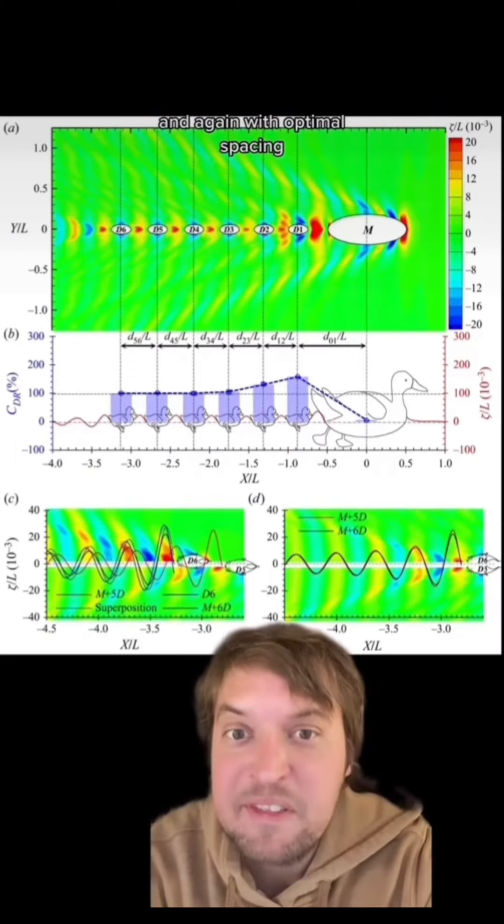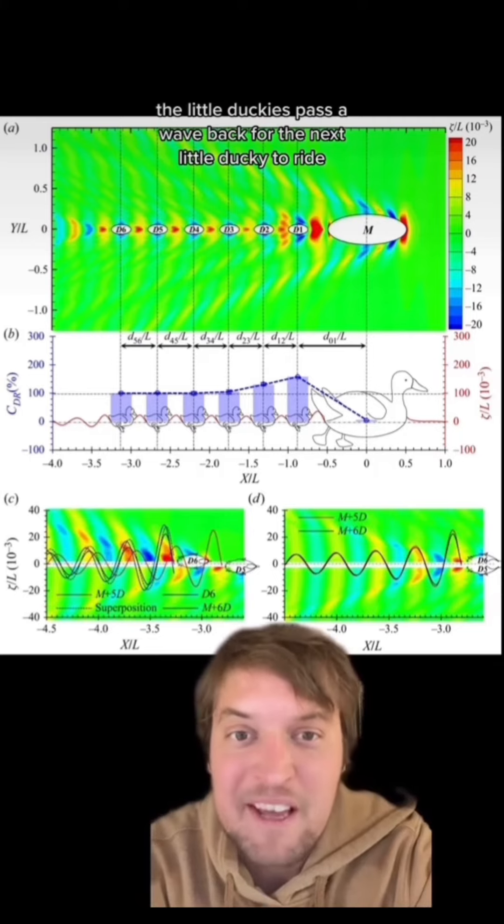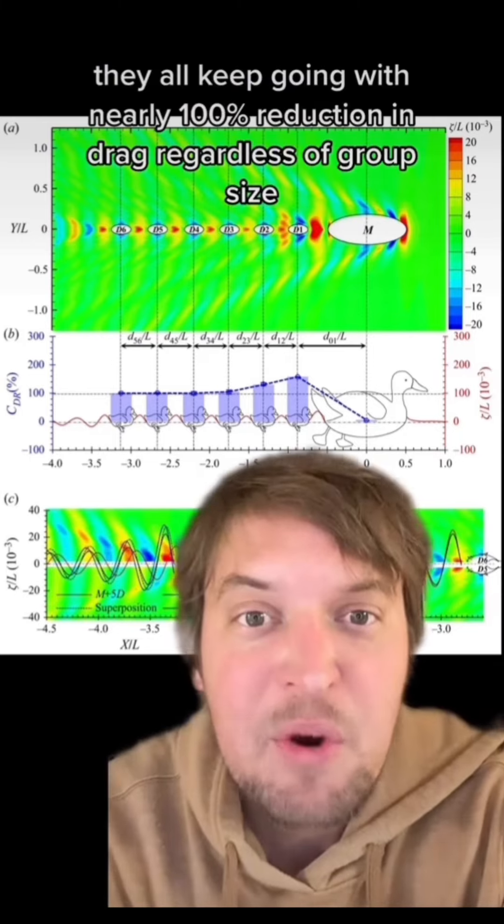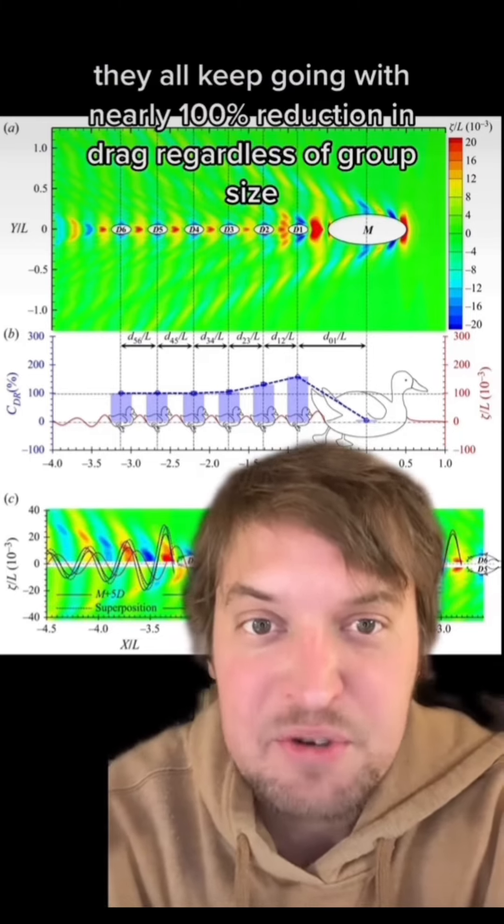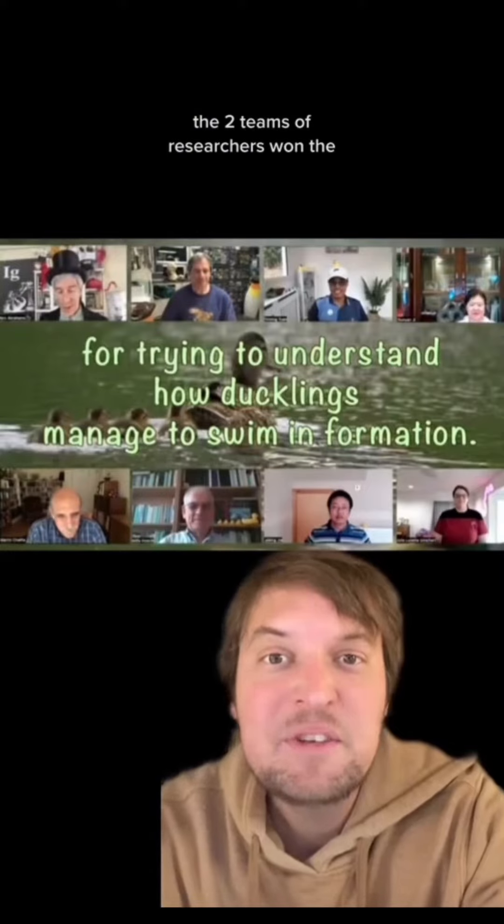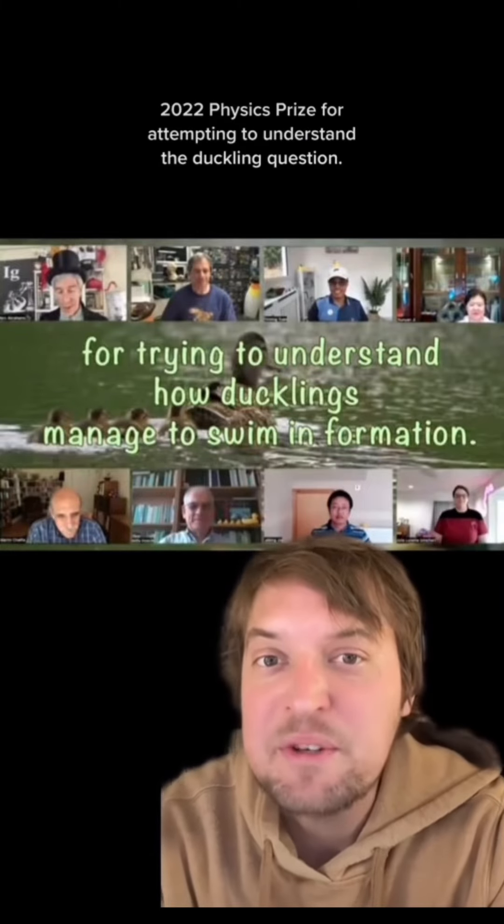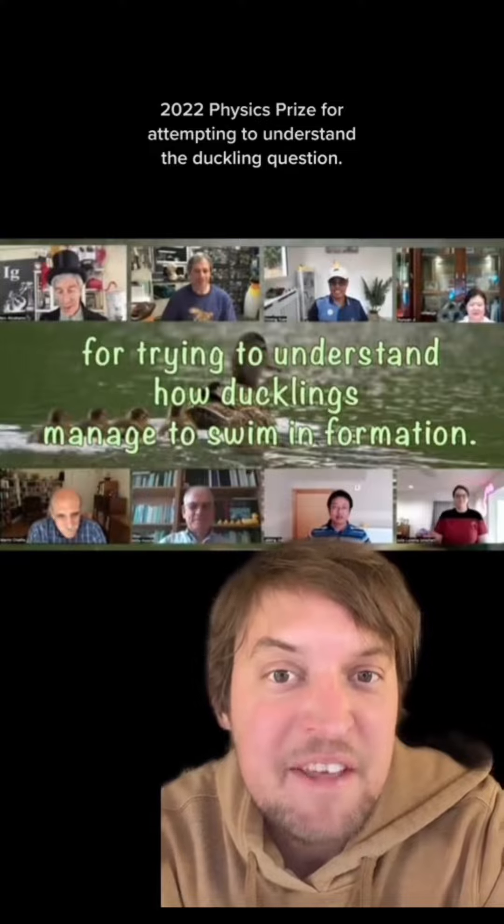And again, with optimal spacing, the little duckies pass a wave back for the next little ducky to ride. And they all keep going with nearly 100% reduction in drag regardless of group size. The two teams of researchers won the 2022 Physics Prize for attempting to understand the duckling question.